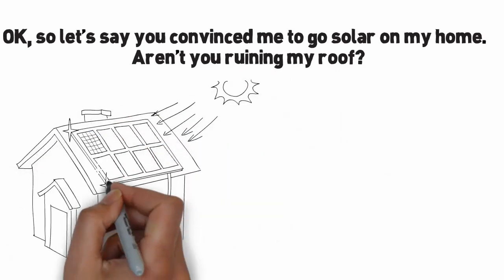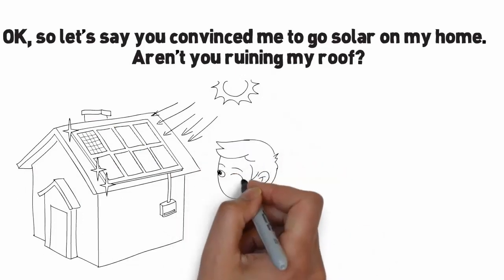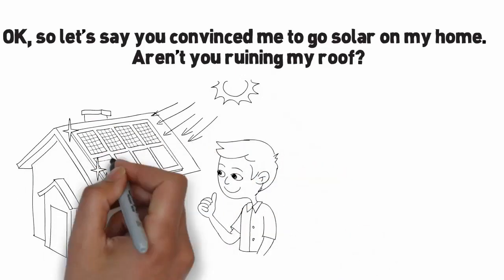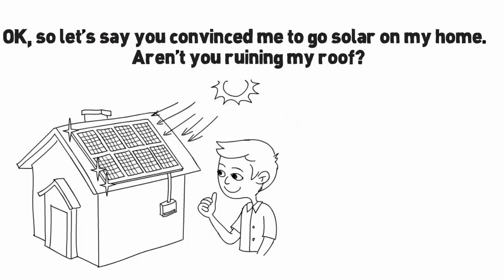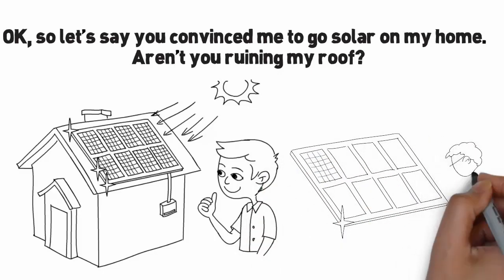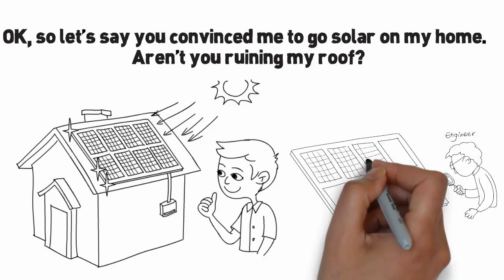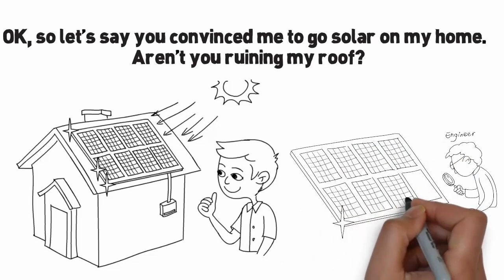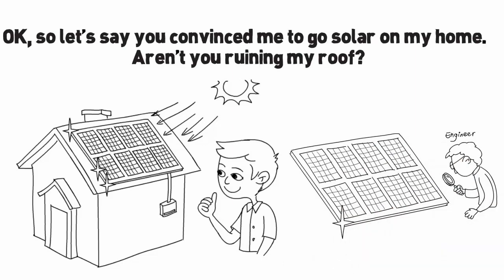All penetrations are sealed and flushed utilizing the same methods that a roofer would use if he needed to penetrate the roof. In addition, all roofs are reviewed and inspected by an architect or engineer in order to confirm that we are able to go ahead with the installation. We also procure all the required permits and approvals from the municipality and state, including all inspections.